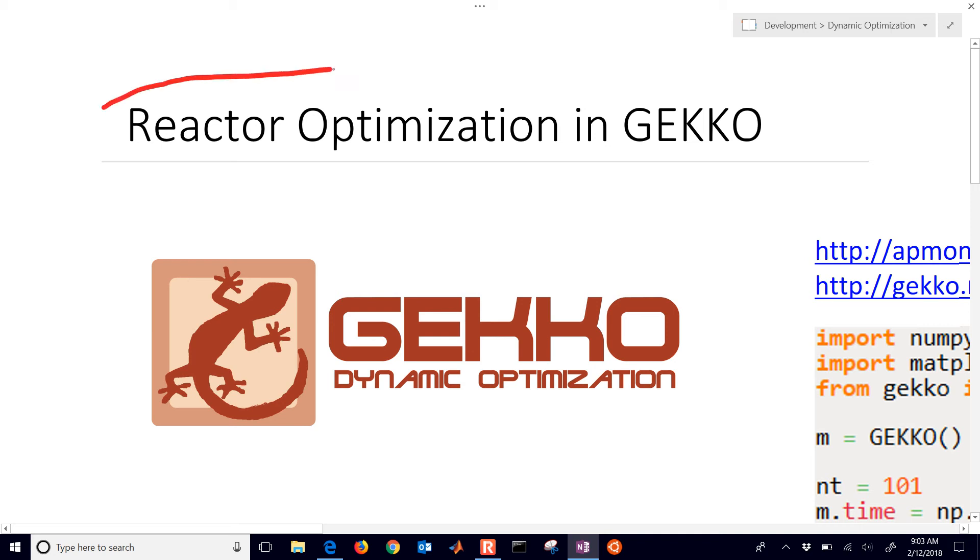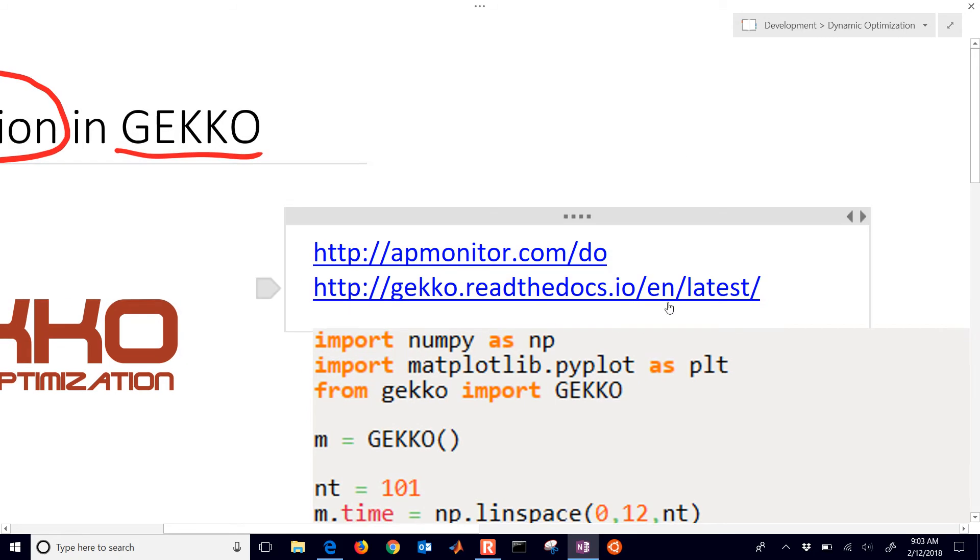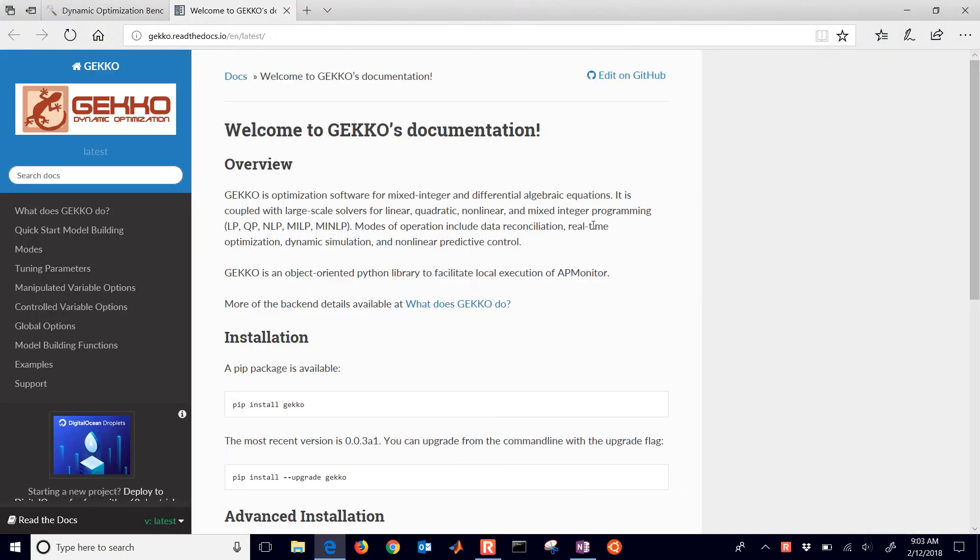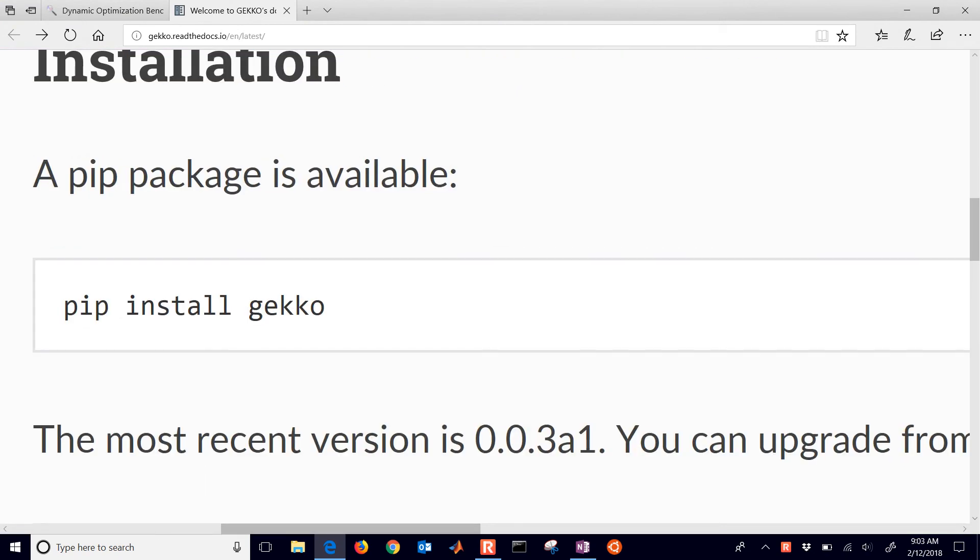We're going to solve a reactor optimization problem with Python Gecko. The very first thing you'll need to do with Python Gecko is install it. You can get the latest version instructions on how to do that here from Read the Docs. And the very first thing you need to do is just pip install gecko.